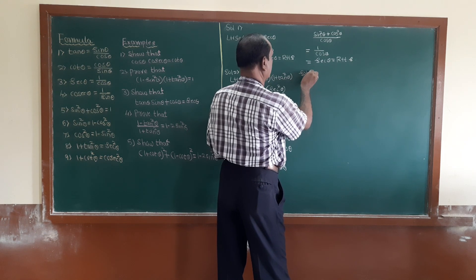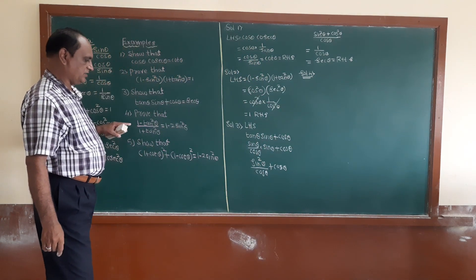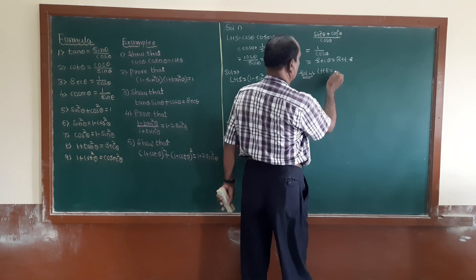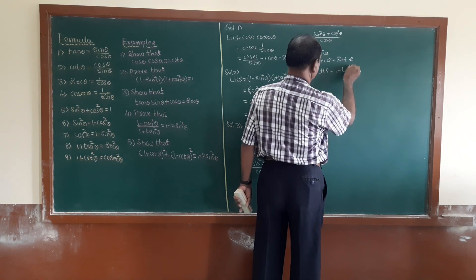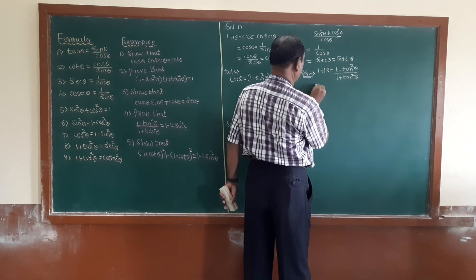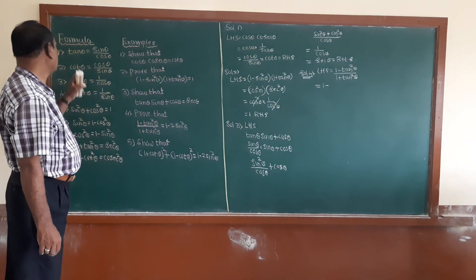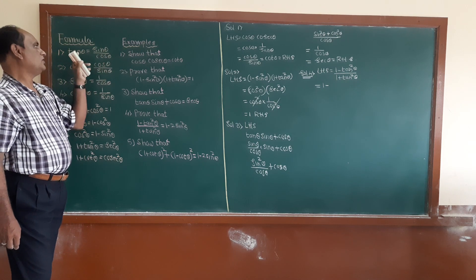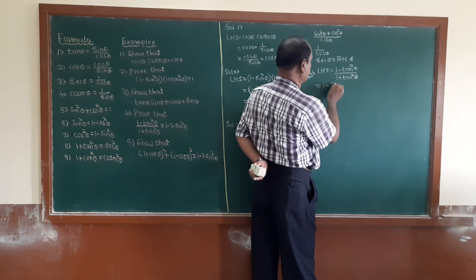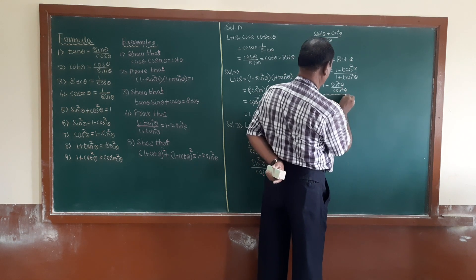Now the solution for the fourth problem. LHS equals (1 minus tan squared theta) divided by (1 plus tan squared theta). Substituting tan theta equals sine theta over cos theta, we get tan squared theta equals sine squared theta over cos squared theta in the numerator.